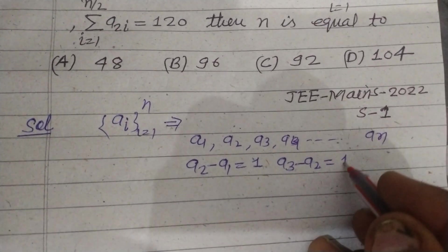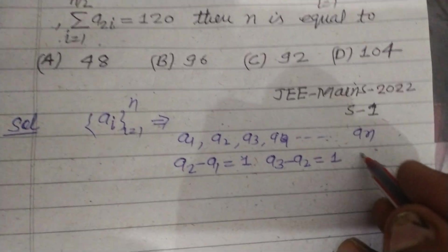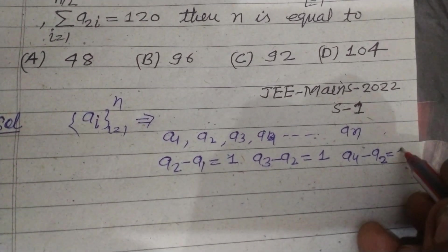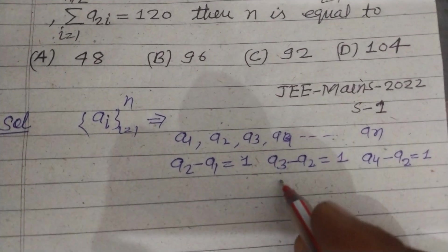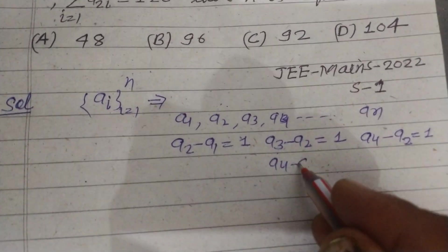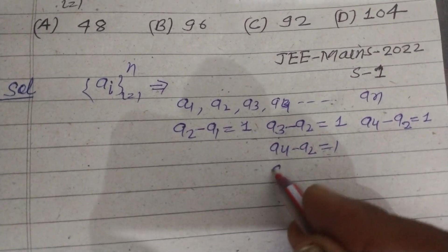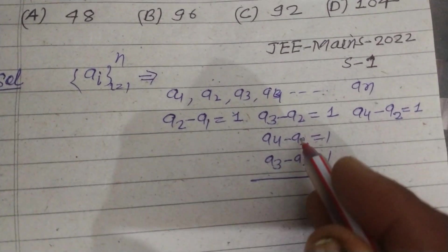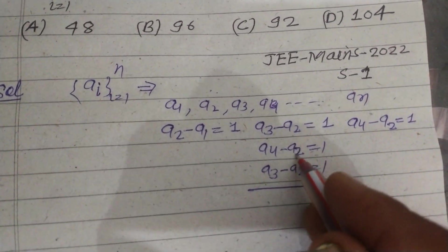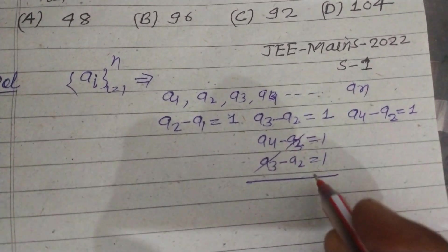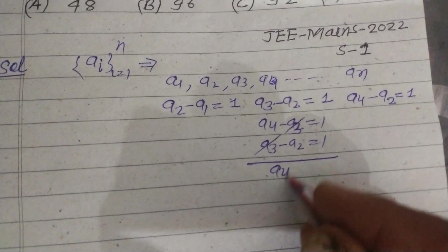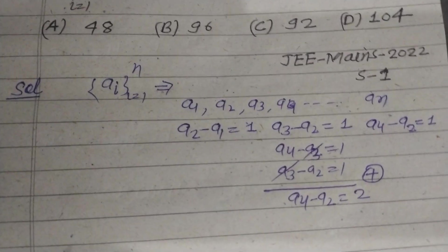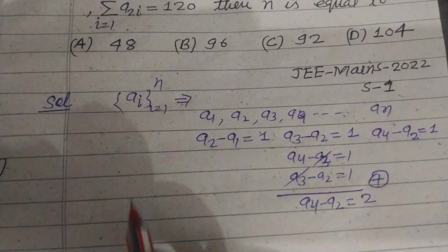The common difference of this arithmetic progression is 1, so a2 minus a1 equals 1, a3 minus a2 equals 1, and a4 minus a3 also equals 1. If we add these two equations, a4 minus a2 equals 1 and a3 minus a2 equals 1, the a3 terms cancel and we get a4 minus a2 equals 2.